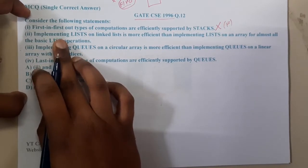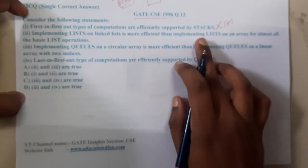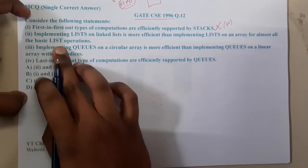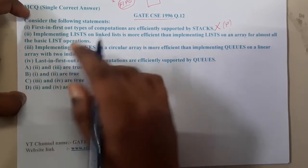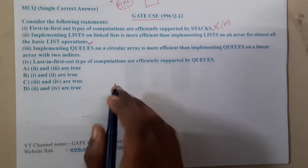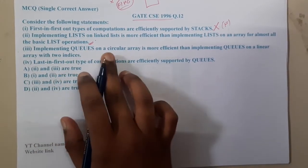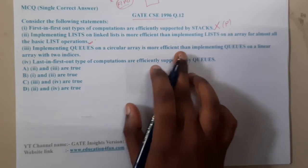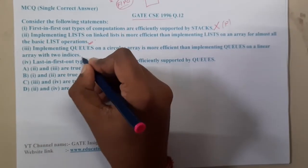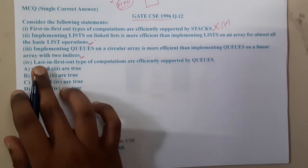The second option says: Implementing lists on linked lists is more efficient than implementing lists on an array for almost all the basic list operations. I think this is correct, but let us come back to verify it later. Similarly, the third option says: Implementation of queues on a circular array is more efficient than queues on a linear array with two indices. This also looks correct.